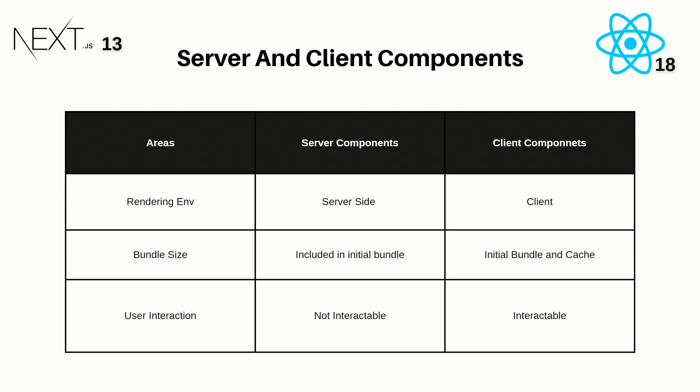The second area is bundle size. For server components, the whole content is included in the initial bundle. For client components, the initial bundle is generated and then everything is stored inside the cache. That is the second difference between server and client components in Next.js version 13.4.